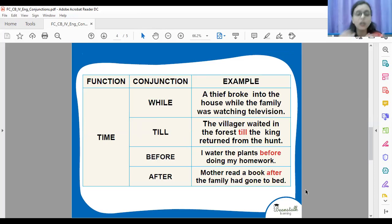Look at the next set of words. While, till, before, after. All these words tell about time in a sentence. A thief broke into the house while the family was watching television. Now look at the sentence. There are two actions happening at the same time. So when two long actions happen at the same time, you join them using while. A thief broke into the house. The thief entering the house and the family watching the television. Both are happening at the same time. So while.